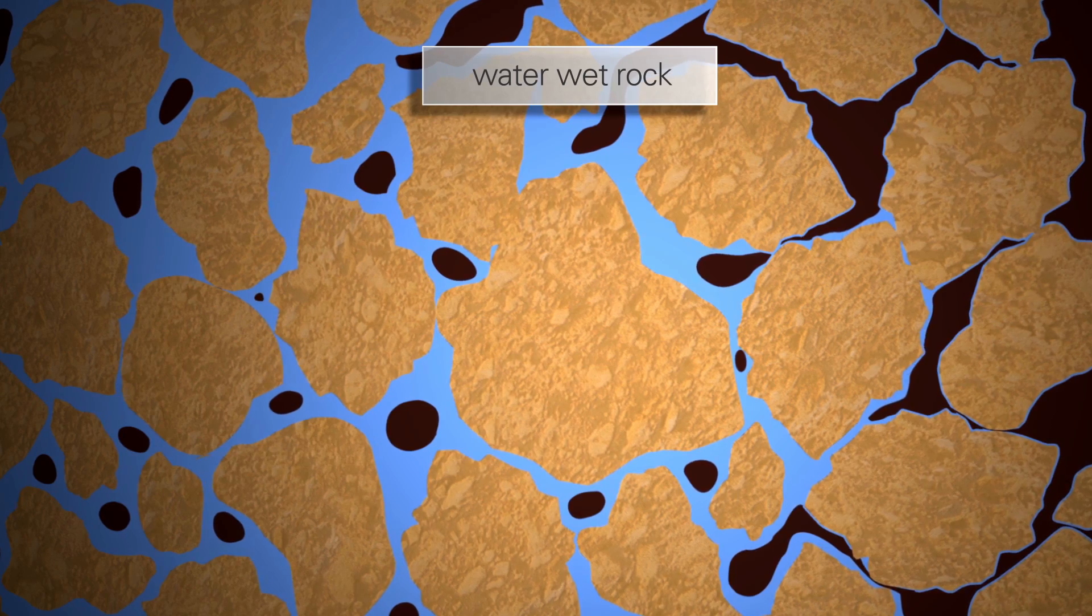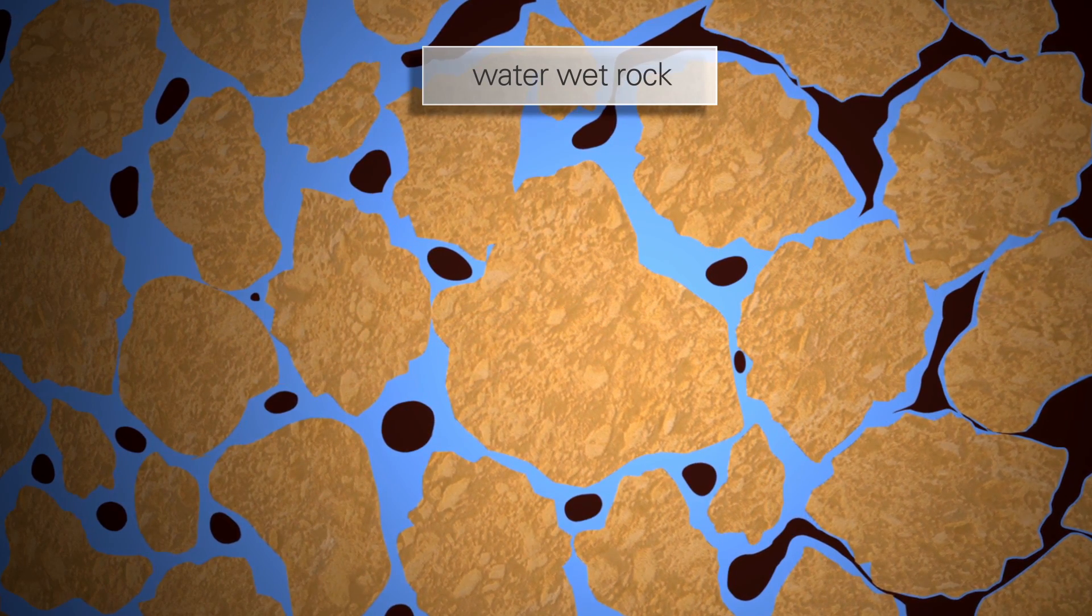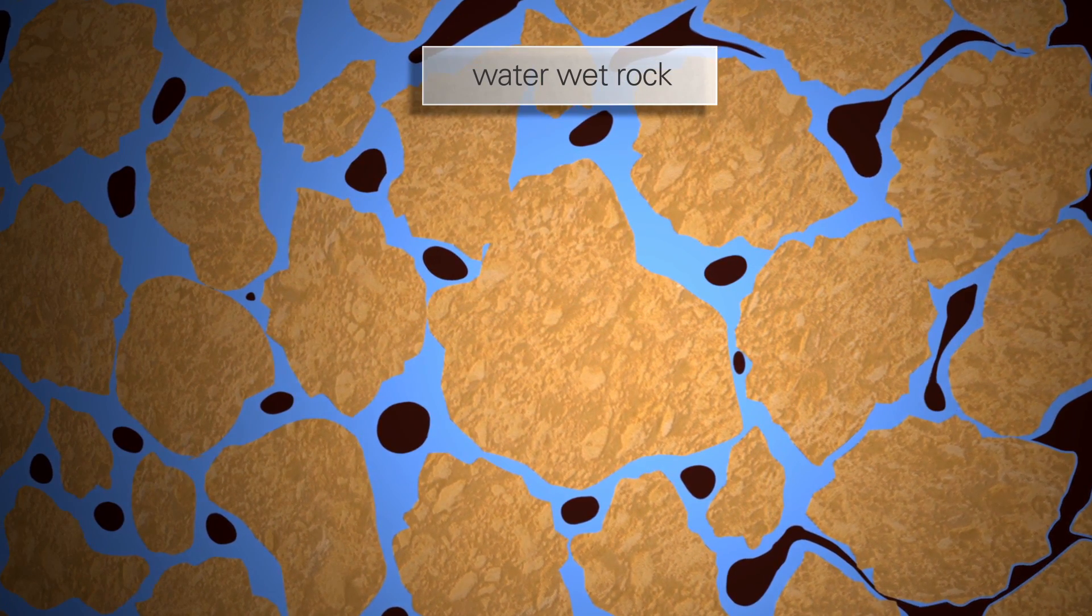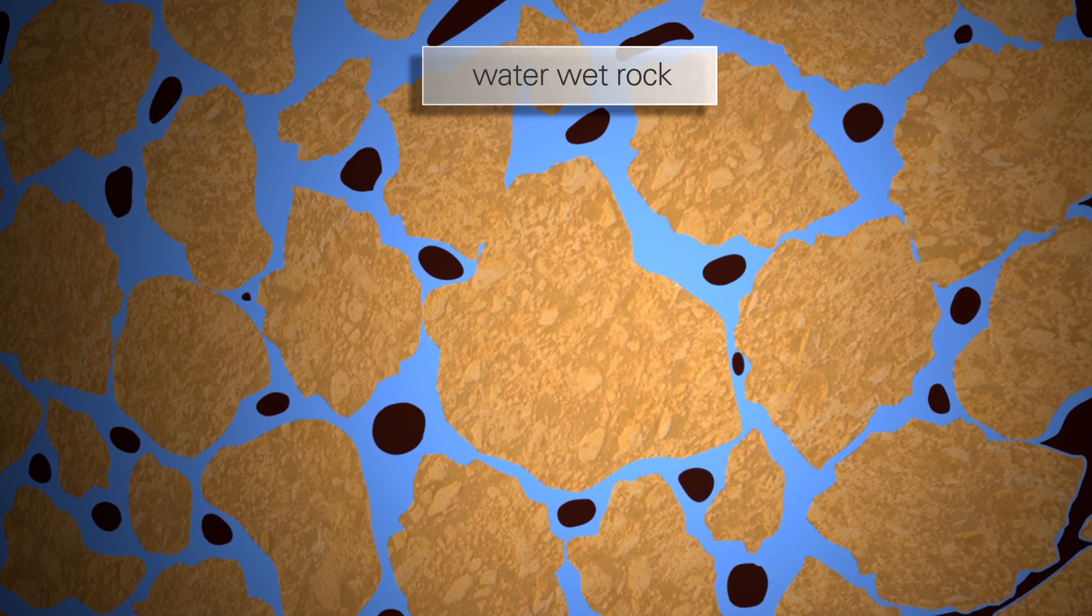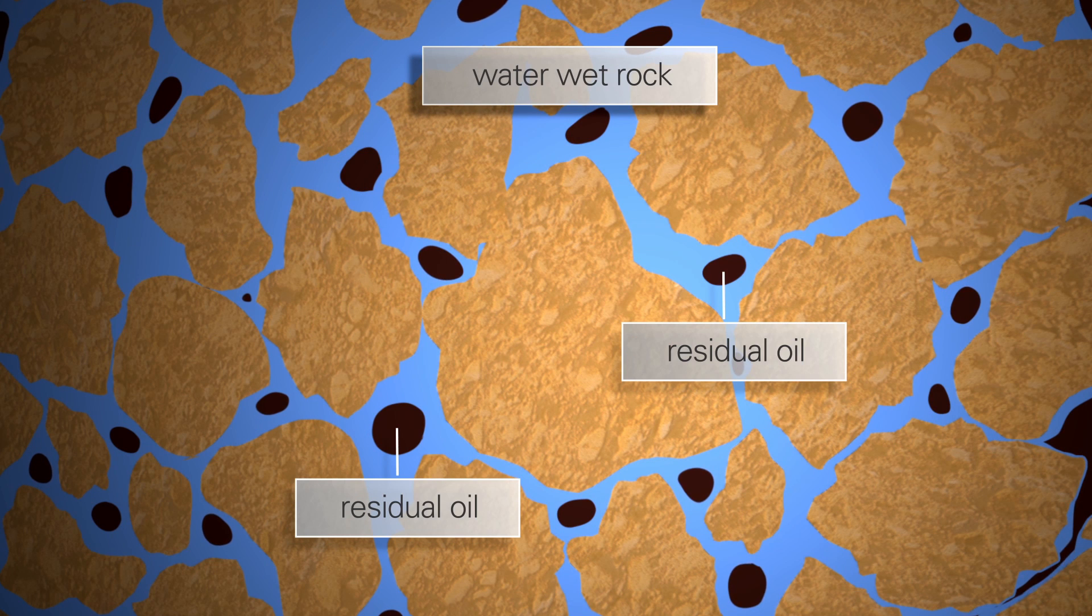As a result, the pathways for the oil to flow through are gradually shut off, finally trapping the oil within the rock pores. This remaining oil is called residual oil.